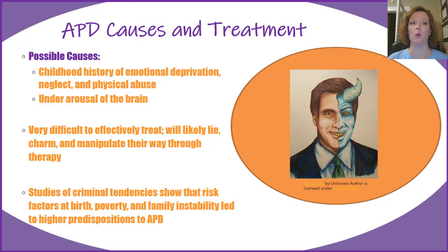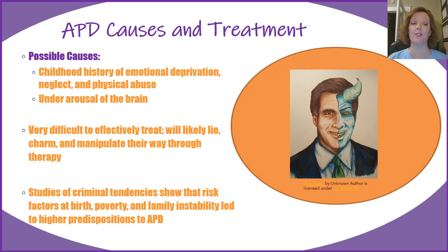Antisocial personality disorder's possible causes include a childhood history of emotional deprivation, neglect, and physical abuse, as well as under-arousal in parts of the brain. This disorder is very difficult to effectively treat because the person will likely lie, tends to be very charming, and can manipulate their way through therapy fairly easily. Studies of criminal tendencies show that risk factors at birth, including poverty and family instability, can lead to a higher predisposition to antisocial personality disorder.